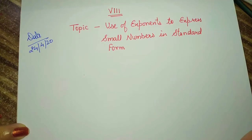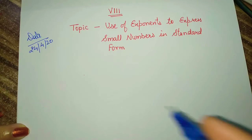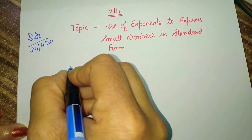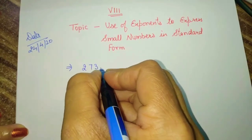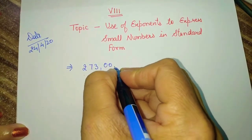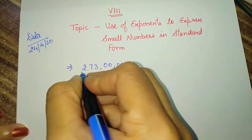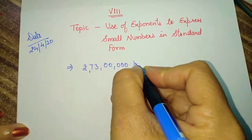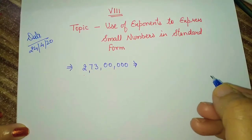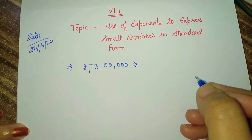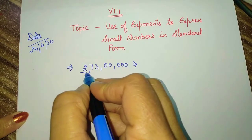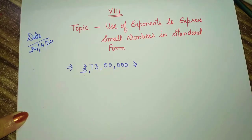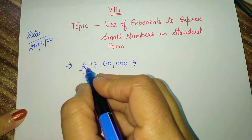So first I will start with a large number so you can understand easily. For example, we have the number 27300000, and we have to write this number in standard form. To write the number in standard form, we only take the first digit and then put the decimal after the first digit.